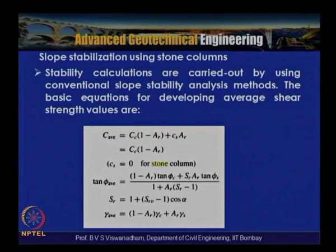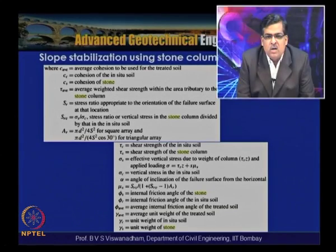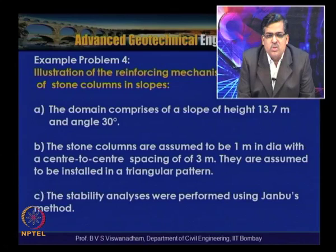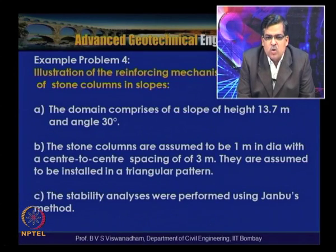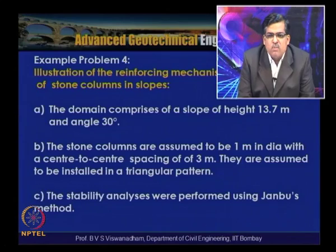The analysis problem considers a slope 13.7 meters high with 13-degree inclination. Stone columns are 1 meter in diameter with 3-meter center-to-center spacing in a triangular pattern. Two analysis methods are used: Method 1 treats stone columns as individual inclusions, and Method 2 homogenizes the zone with equivalent c and φ values. Stability analysis is performed using Janbu's method.